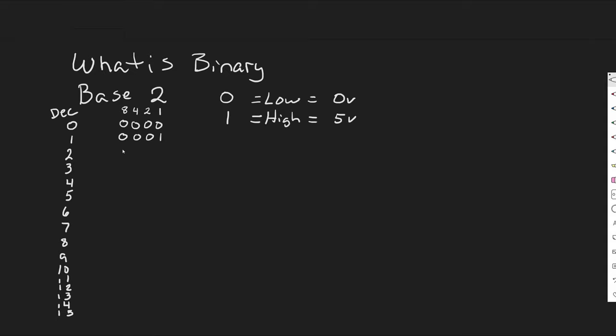So then two: no eights, no fours, we'd have a two and we'd have a zero for one. Three: 0011. Four: 0100. Five: 0101. Six: 0110. Seven: 0111.